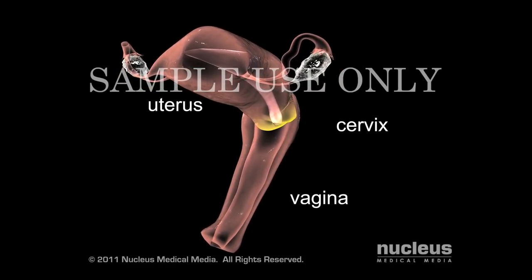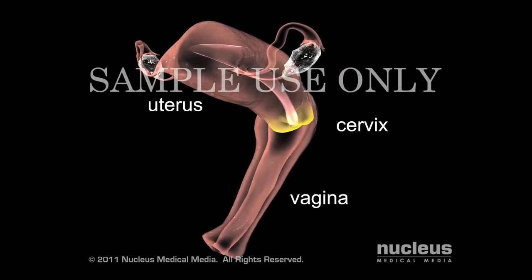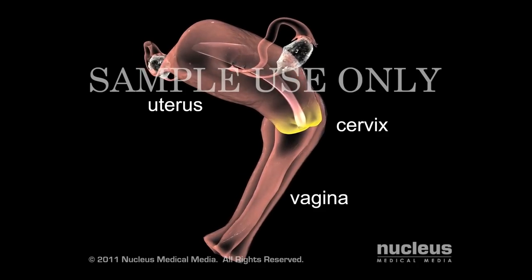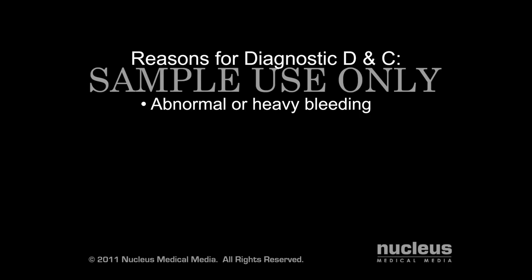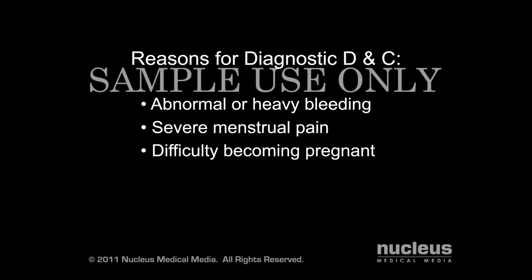The lower part of the uterus, called the cervix, connects the vagina to the uterus. A diagnostic D&C may be performed to investigate the cause of the following conditions: abnormal or heavy bleeding, severe menstrual pain, difficulty becoming pregnant, or abnormal cells found in a pap smear.